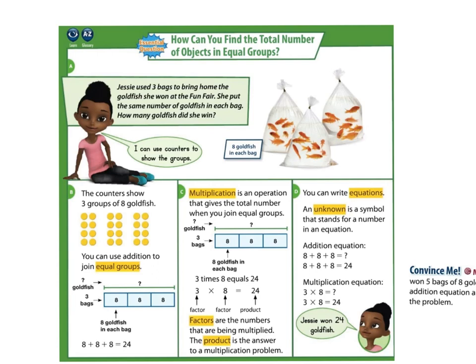So how can you find the total number of objects in equal groups? Let's look below. Jessie used 3 bags to bring home the goldfish she won at the fair. She put the same number of goldfish in each bag. How many goldfish did she win? You can use counters to show the groups. You can draw pictures.